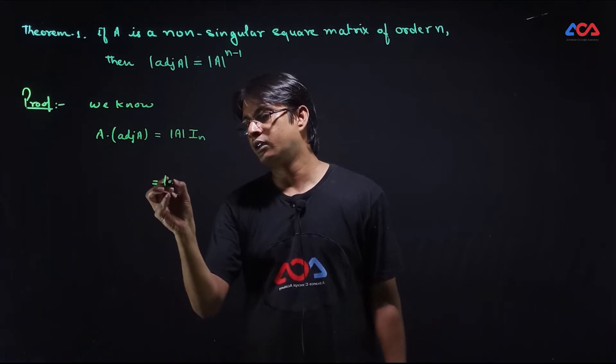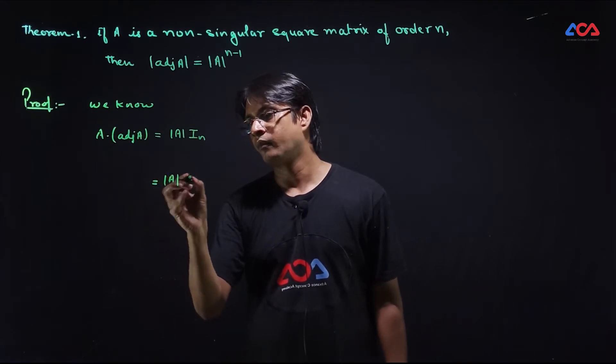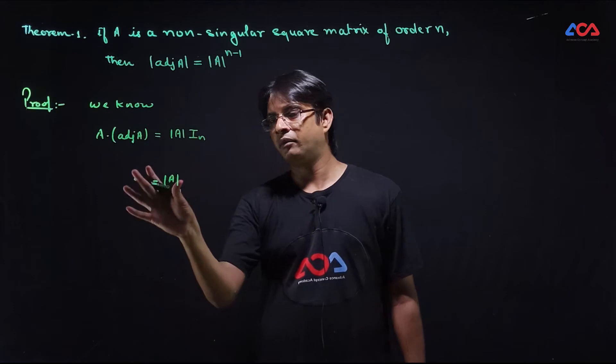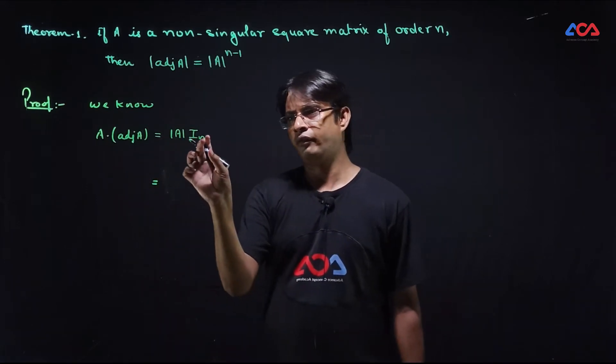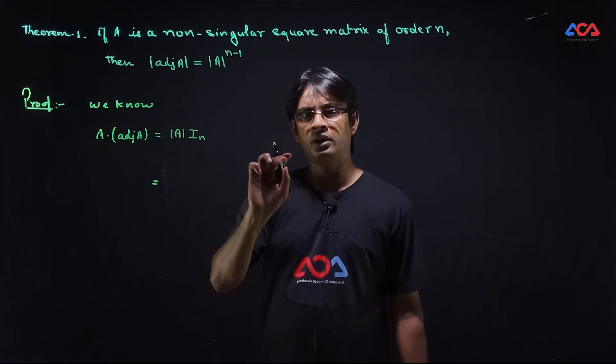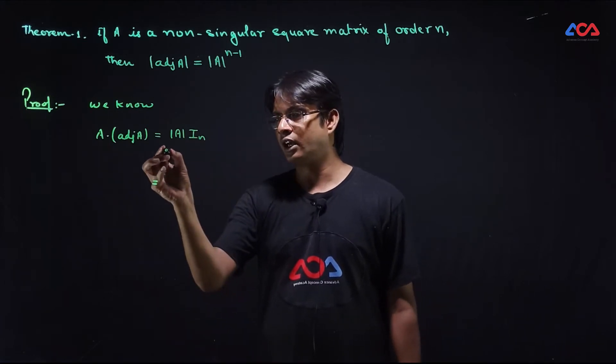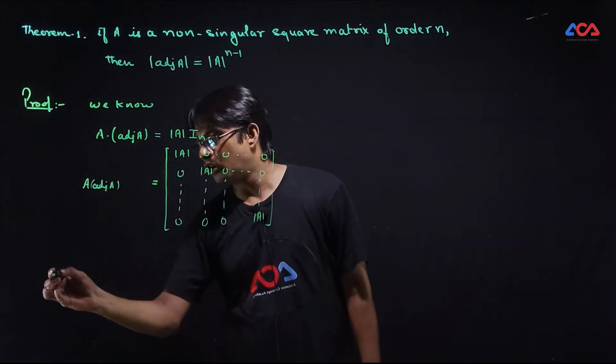Therefore, determinant of A is a value. When we multiply it in identity matrix, what will be the result? Let us take determinant on both sides.